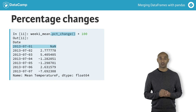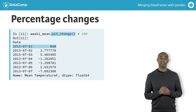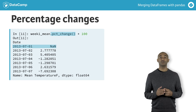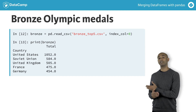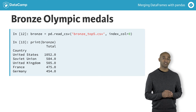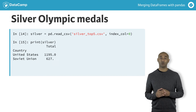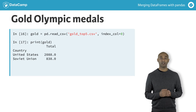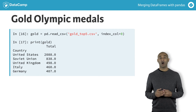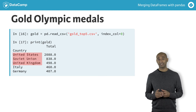Let's examine how arithmetic operations work between distinct series or data frames with non-aligned indexes, which happens often in practice. We'll use Olympic medal data from 1896 to 2008. Here are the top five bronze medal winning countries, the top five silver medal winning countries, and the top five gold medal winning countries for that period. All three data frames have the same indices for the first three rows: United States, Soviet Union, and United Kingdom.